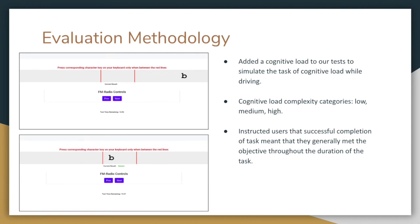Each group was further divided into three load complexity categories: low, medium, and high, with the amount of time allowed for each task shrinking as complexity increases. The cognitive tests simulated the cognitive load of driving: users were presented with a scrolling series of letters and had to press the corresponding key when the letter was within defined boundaries. We logged an error when a user failed to do this correctly. To ensure users remained engaged, we stated that they may receive audio instructions they need to comply with, though no audio instructions were actually provided.